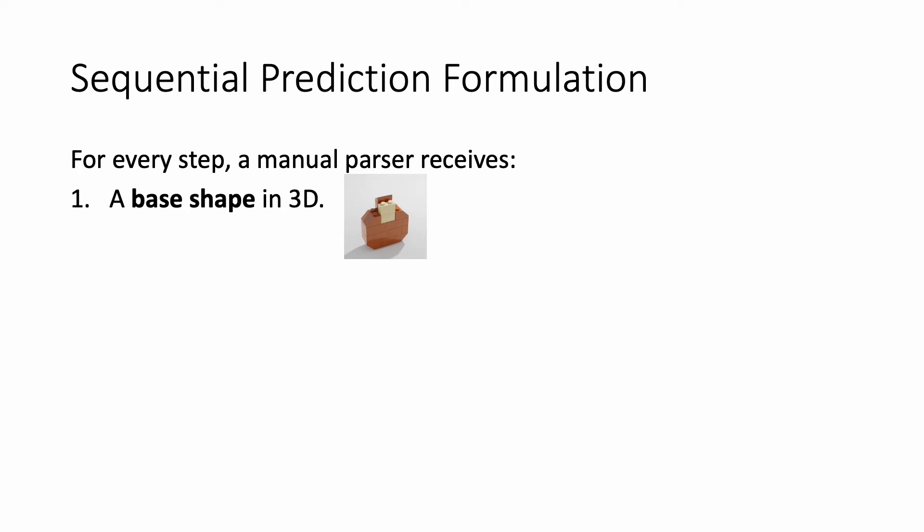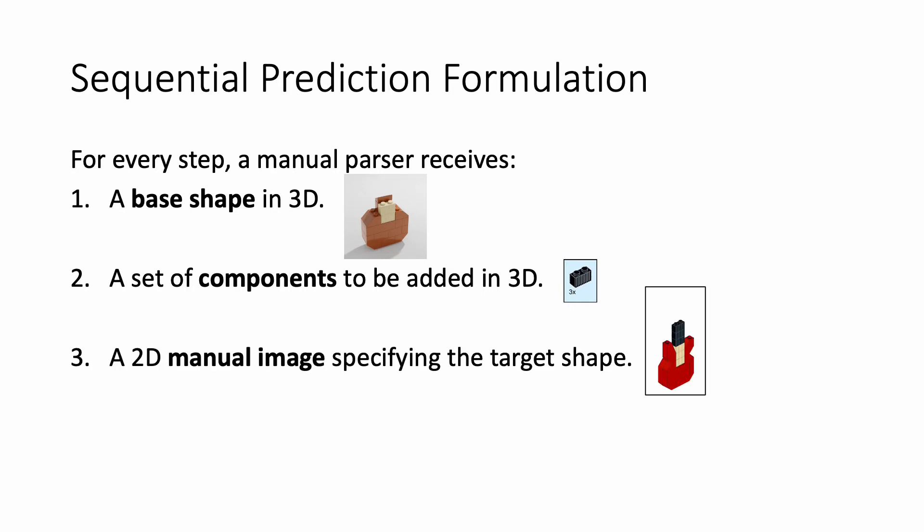In each step, a manual parser receives first, a base shape in 3D representing the current state of what we have already assembled. Second, a set of components to be added in 3D representing the component's information. Each component can either be a primitive brick or a sub-module assembled in previous steps. Third, a 2D image specifying the projection of the target shape. With this information, the parser is expected to output 3D pose for each component in this step.